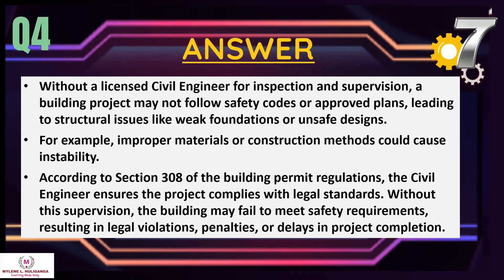Without a licensed civil engineer for inspection and supervision, a building project may not follow safety codes or approved plans, leading to structural issues like weak foundations or unsafe designs. For example, improper materials or construction methods could cause instability. According to Section 308 of the building permit regulations, the civil engineer ensures the project's compliance with legal standards. Without this supervision, the building may fail to meet safety requirements, resulting in legal violations, penalties, or delays in project completion.